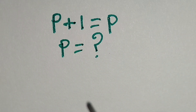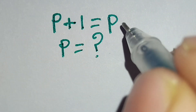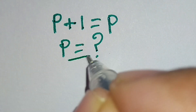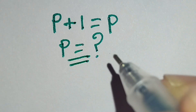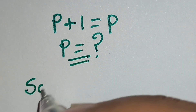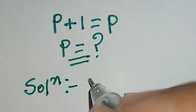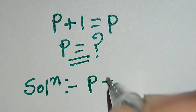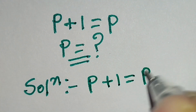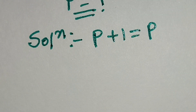Hello, this is a nice math problem. p plus 1 is equal to p, and we have to find the value of p. So let's start the solution. The given equation is p plus 1 is equal to p.